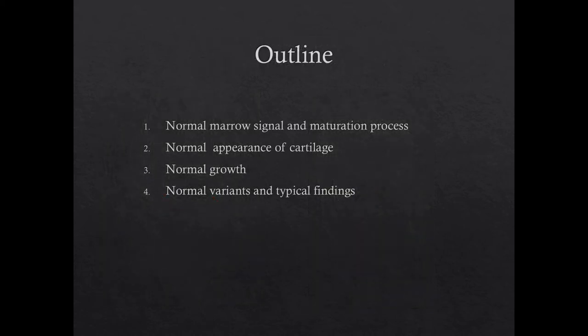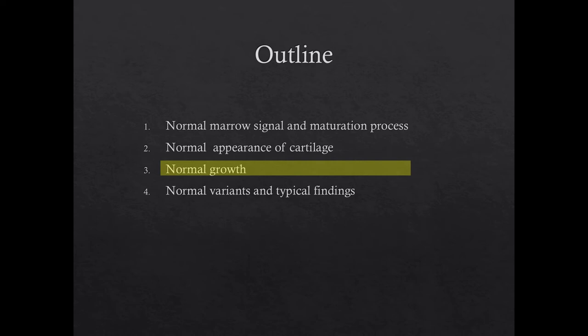Next, we will move on to a discussion of some normal changes seen during growth. We will mainly be discussing longitudinal growth through the process of endochondral ossification, which is how many bones grow and ossify by a cartilage model. This includes the long bones, the vertebral column, and the skull base. The process of bony growth through membranous ossification, such as the facial bones and skull, will not be discussed here. However, the long bones do increase their diameter by membranous ossification through the periosteum.